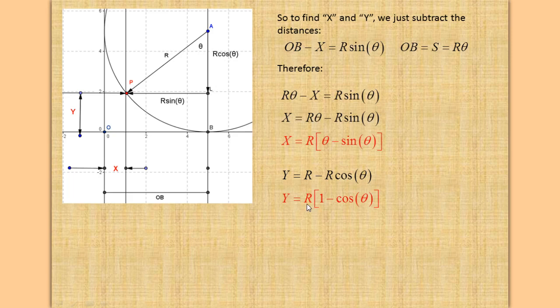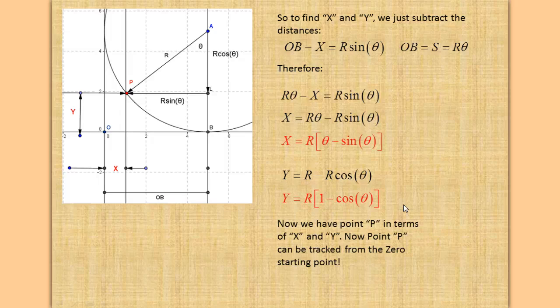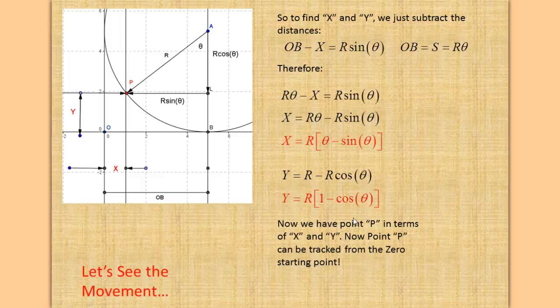Now to get Y, we say Y equals the radius minus r cosine θ, and we solve for Y. Now we have point P in terms of X and Y, so point P can be tracked from the zero starting point.